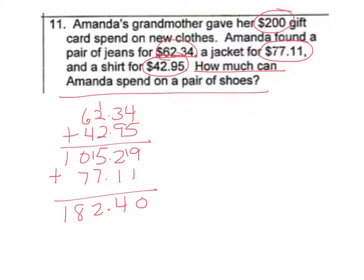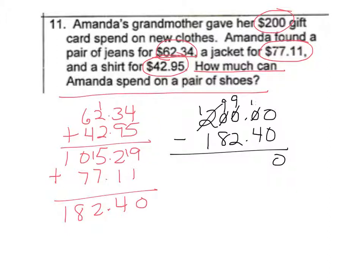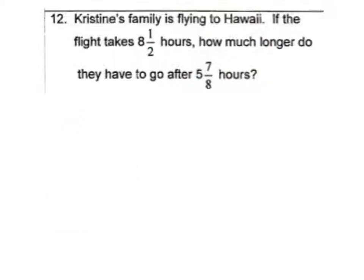So to figure out how much she has left, we would have to subtract how much she spent from the total. So $200 minus $182.40. Going to have to borrow. This becomes a 1. And again, that's going to be a 10 and then a 9, a 10 and then a 9, and then this becomes a 10. 9 minus 2 is 7. 9 minus 8 is 1. So she has $17.60 left to spend on a pair of shoes.